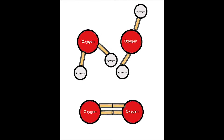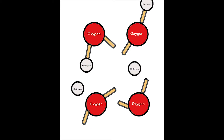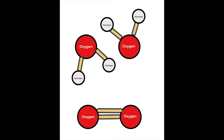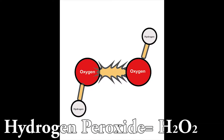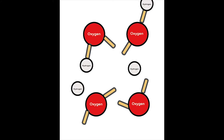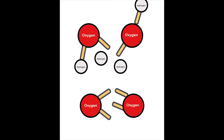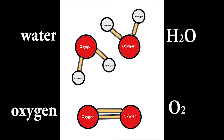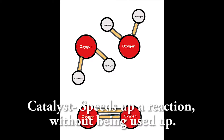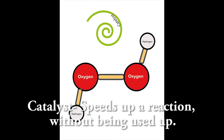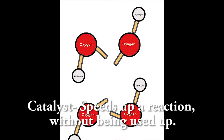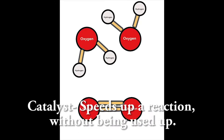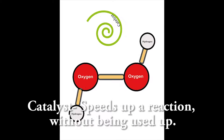Hydrogen peroxide is a strong oxidizer because its chemical formula is H2O2. Over time, H2O2 decomposes to oxygen gas, O2, and water, H2O. The yeast acts as a catalyst by taking off one of the oxygens so that the peroxide breaks down faster.